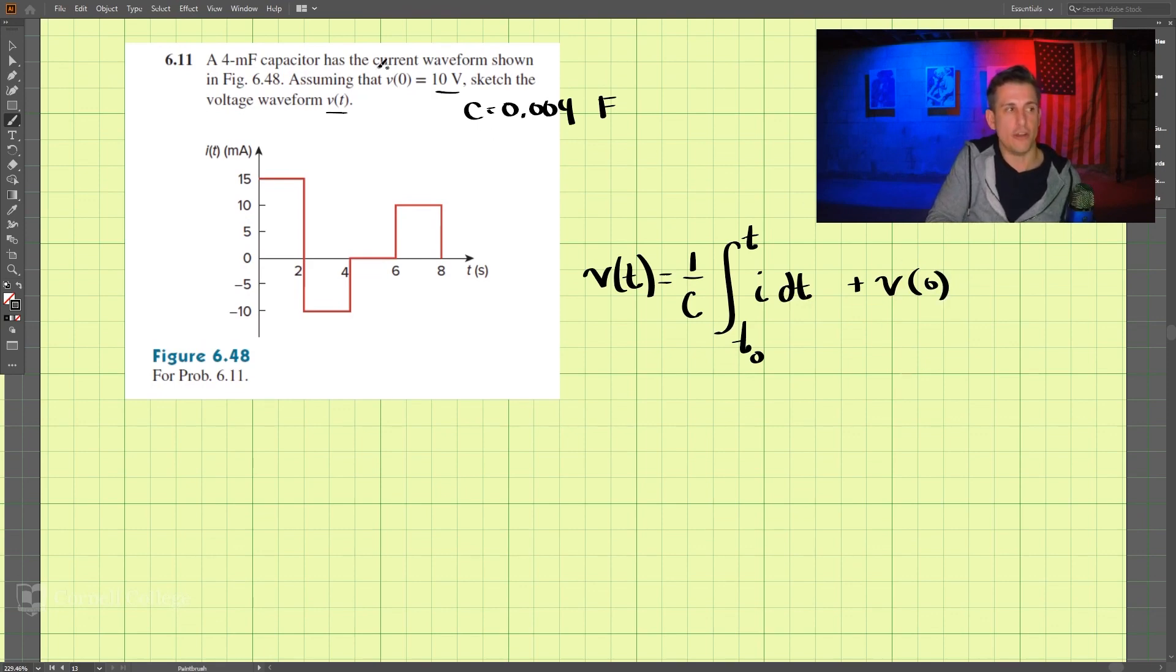And we already know our voltage at time 0, this is 10 volts. And so this value here is the area underneath this curve, it represents the area underneath the curve. So we need to use this to be able to solve for the voltage at time T, and our capacitance here is 0.004.